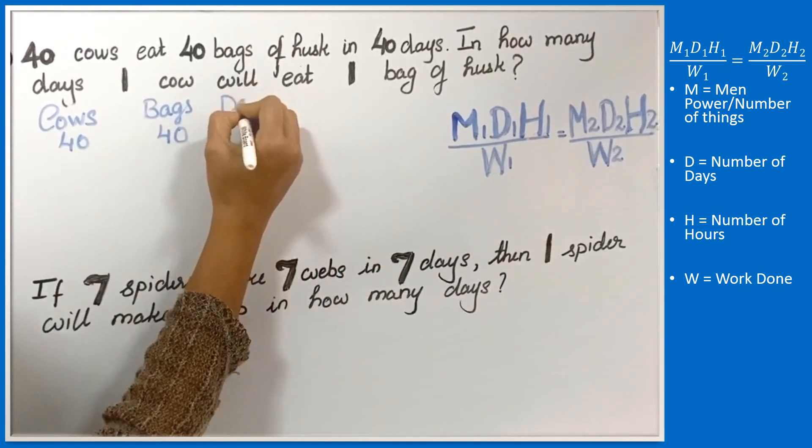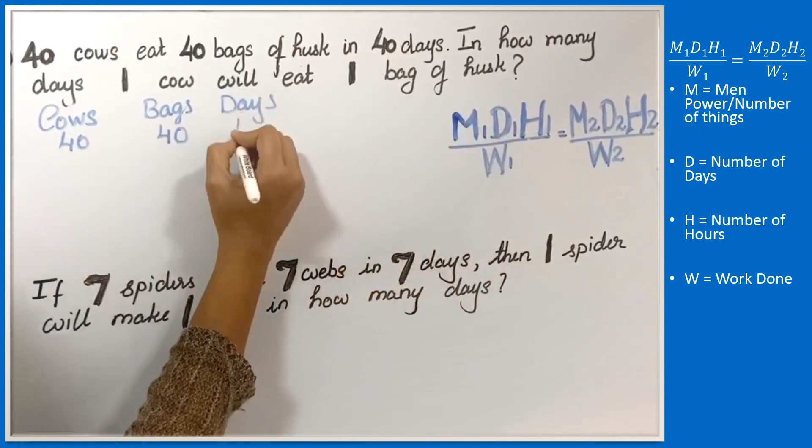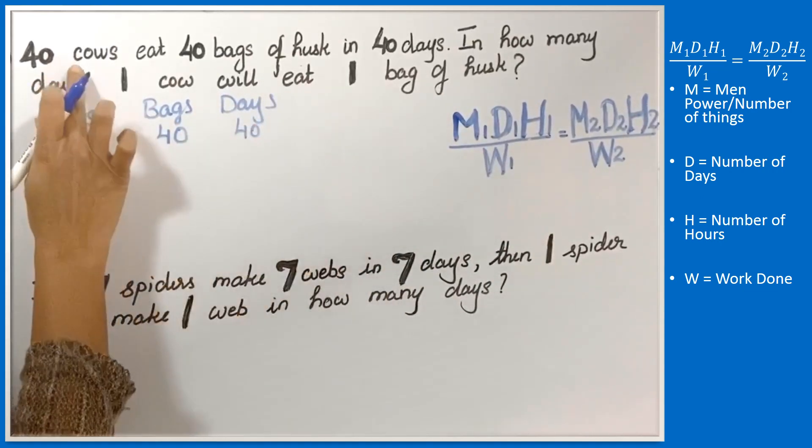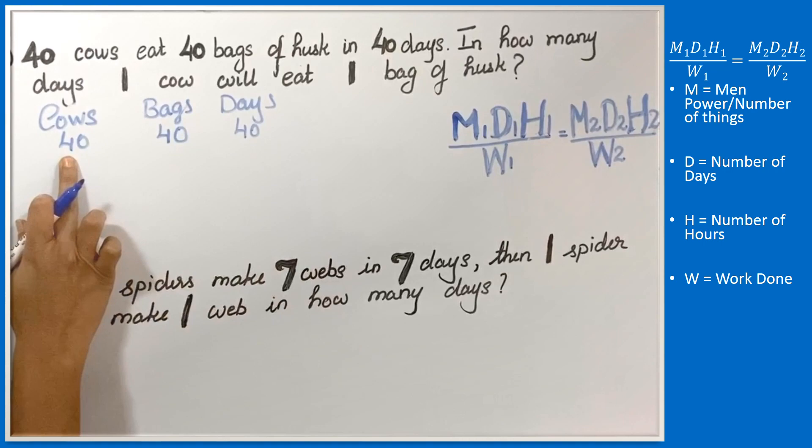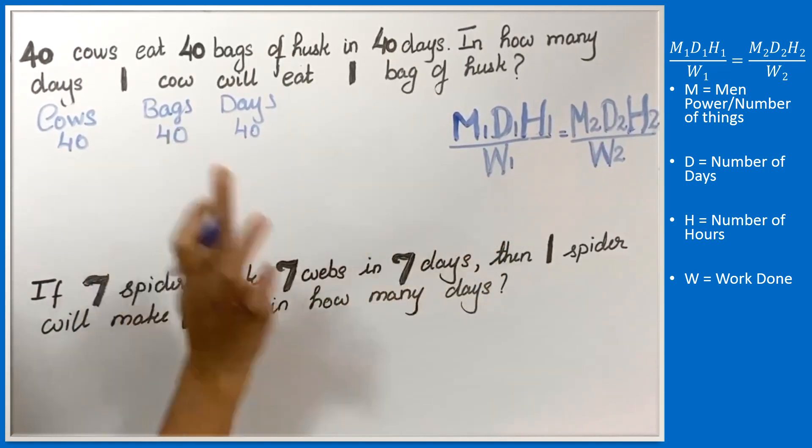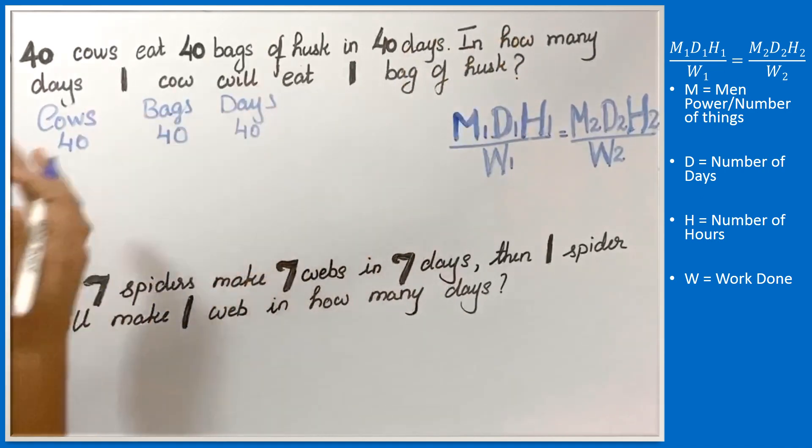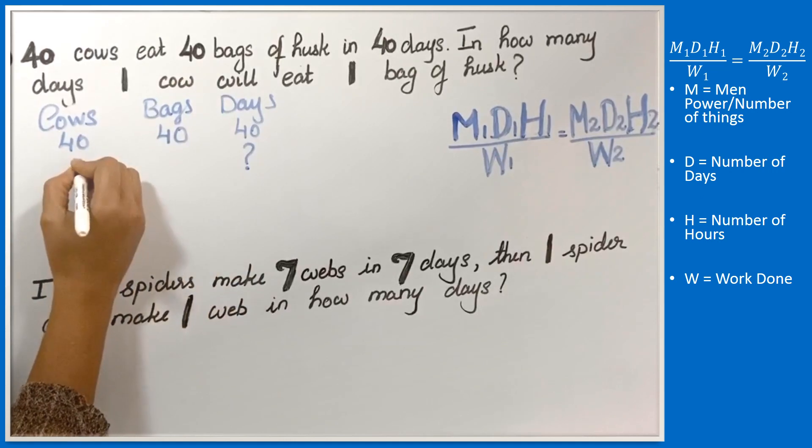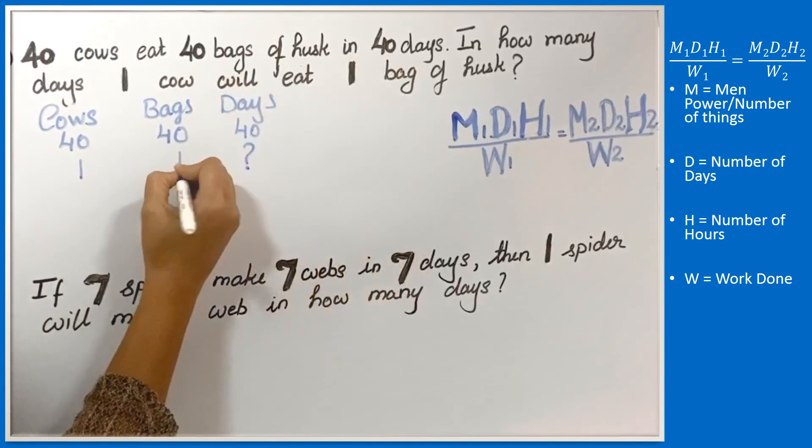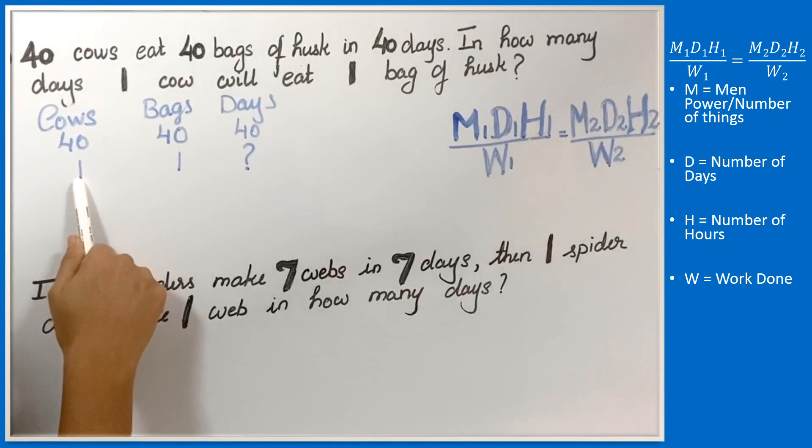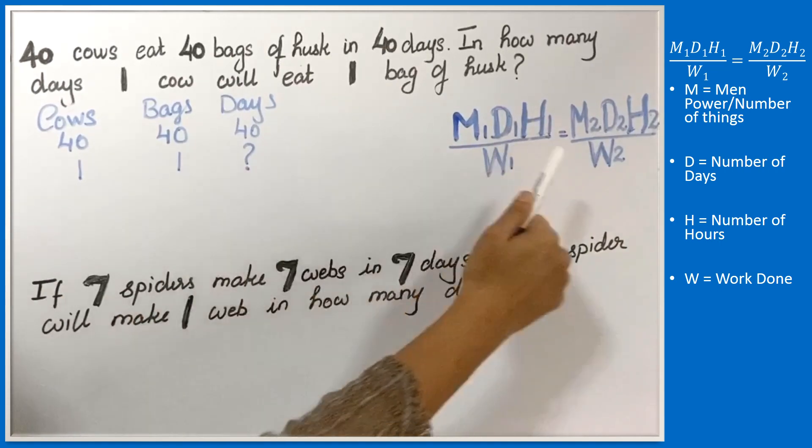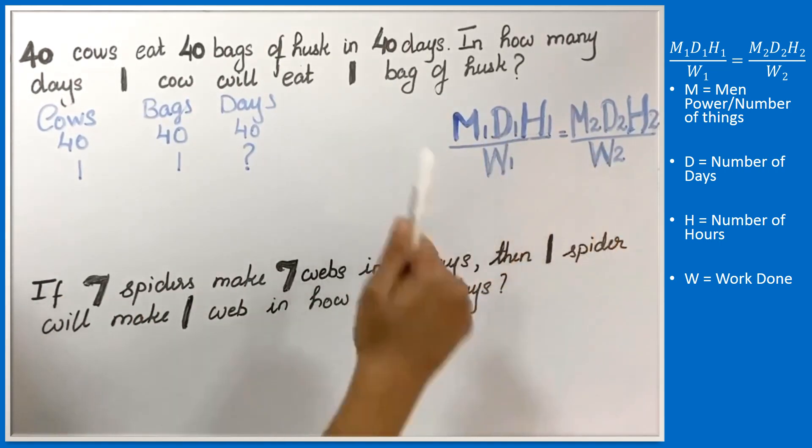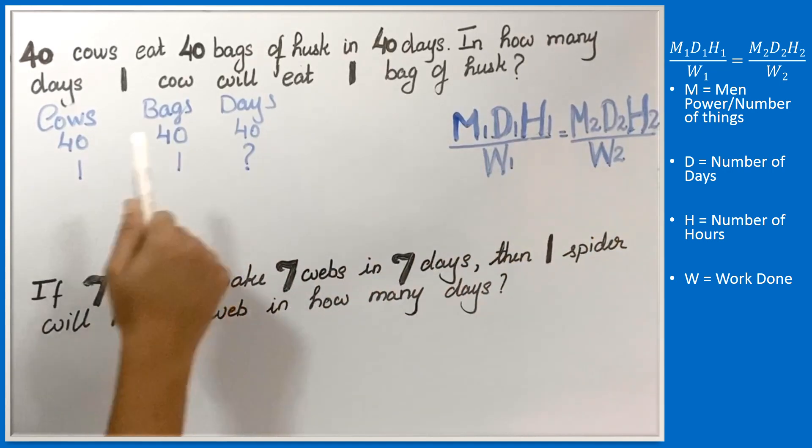Then days, that is D1. In how many days? 40 days. So 40 cows eat 40 bags of husk in 40 days. M1 is 40, D1 is 40, W1 is 40. Then the second sentence: in how many days? It is unknown X. One cow, number of cows 1. Will eat 1 bag of husk. So M2 is 1, D2 is the days unknown, W2 is 1 bag.